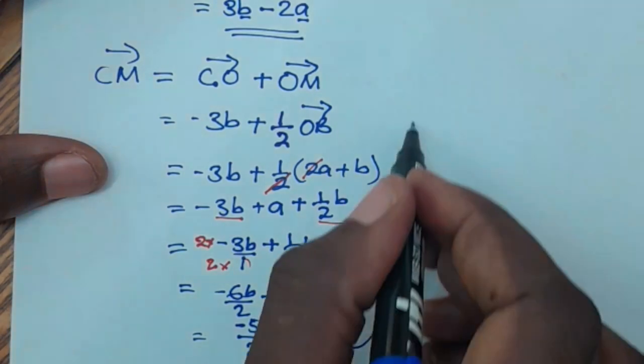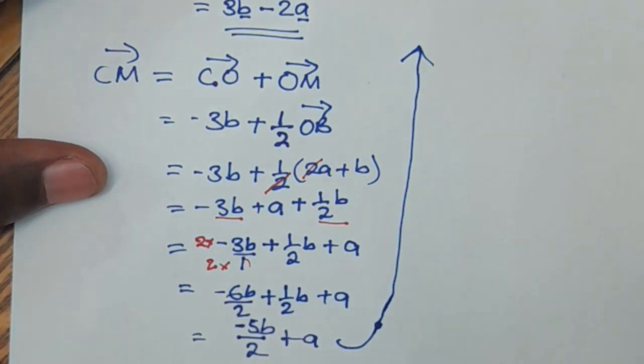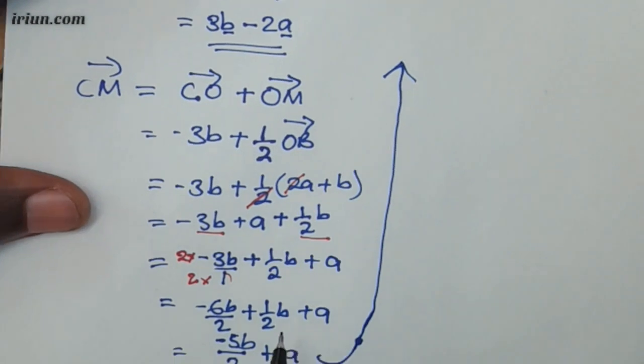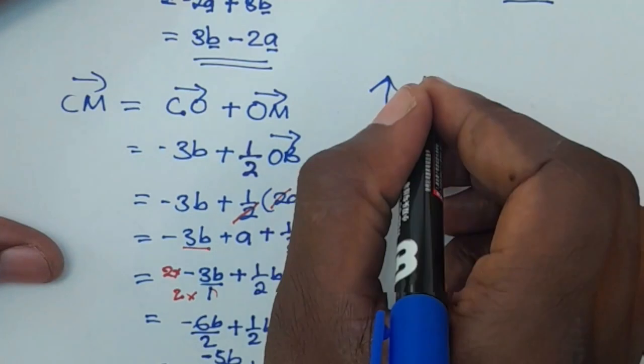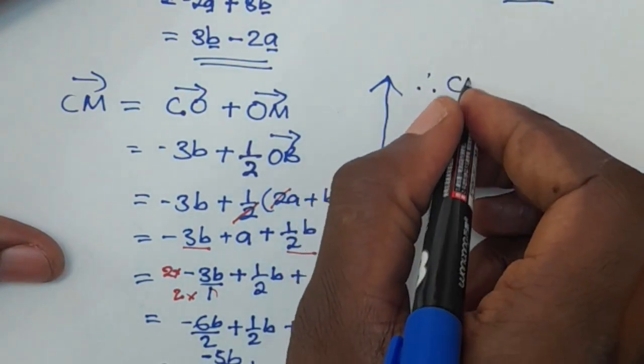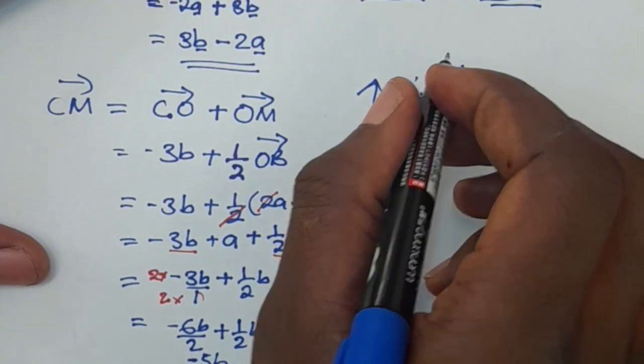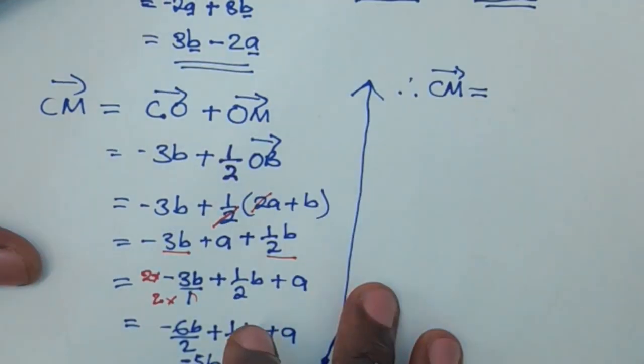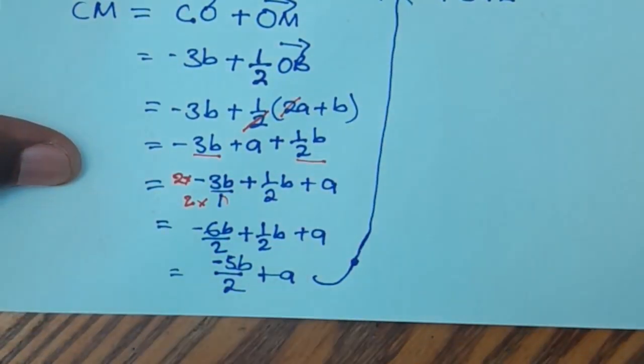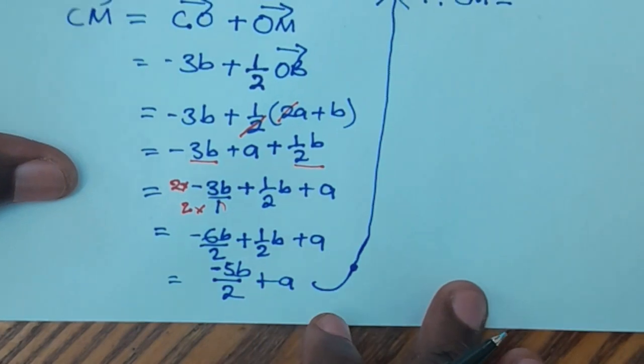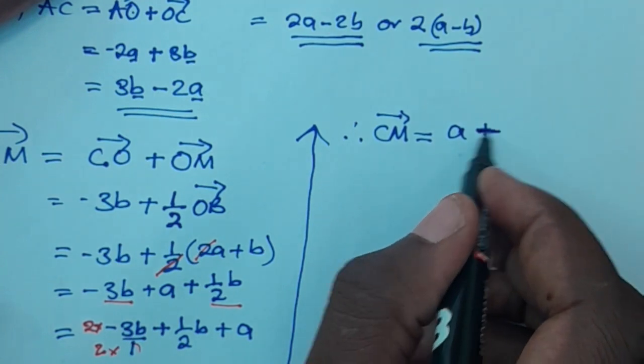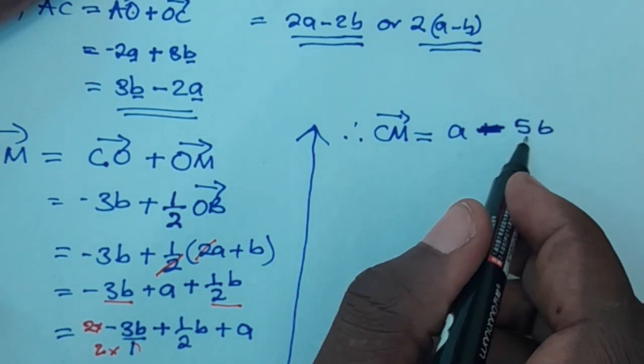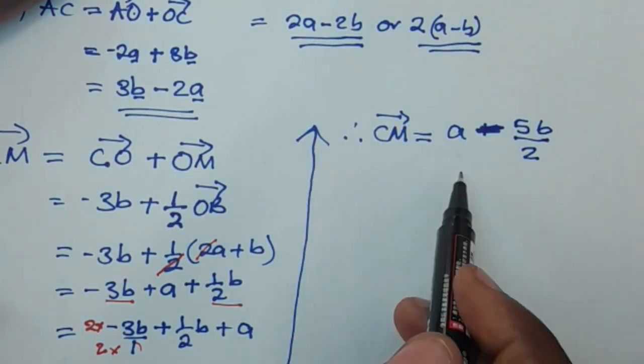For the sake of space, I'm taking it up here. So again from algebra, we begin with positive terms and end with negative terms. So we're going to conclude and say, therefore, CM is equal to, we found this here, but we'll start with a positive term. So we'll have a plus, a minus 5b over 2. So this is the answer.